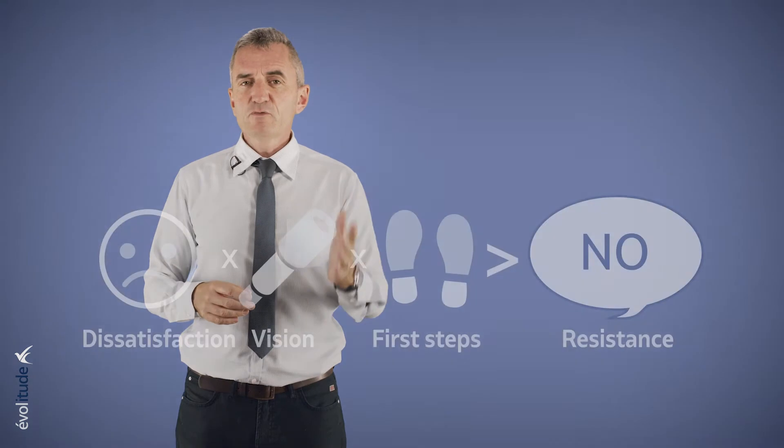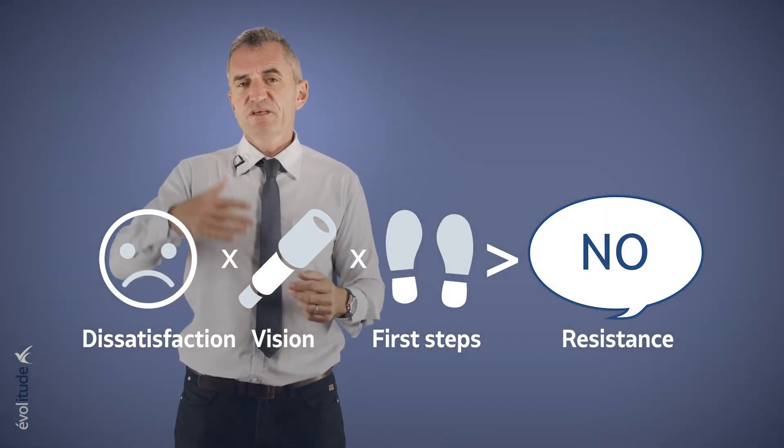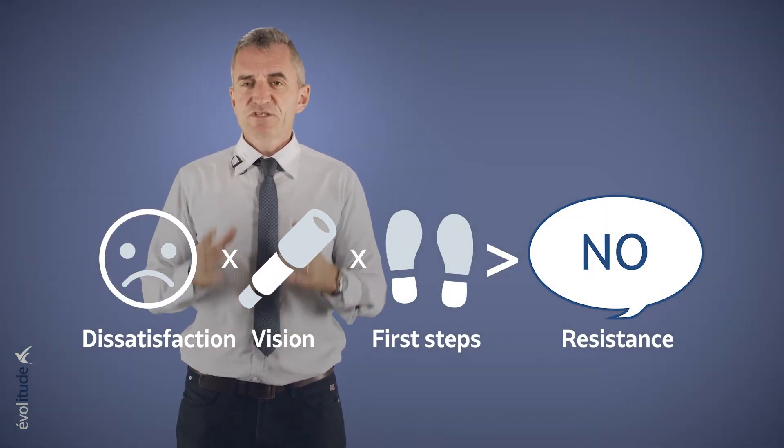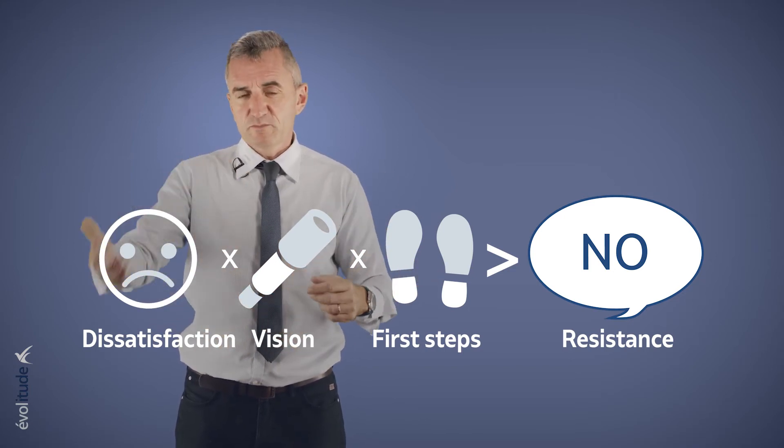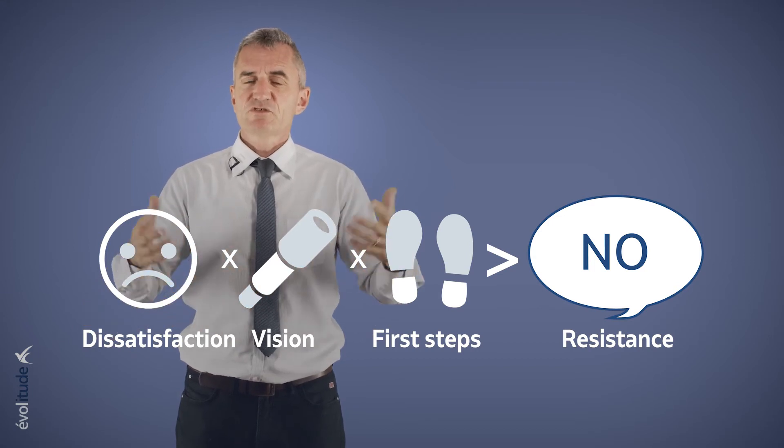A second excerpt on the formula of change. As a reminder, according to the formula of change, change is possible if and only if D multiplied by V multiplied by F is greater than R. Dissatisfaction with the current situation, multiplied by vision, multiplied by first steps, is greater than resistance to change. If one of the first three items is at or near zero, the change will also be at or near zero, and the resistance to change will dominate.